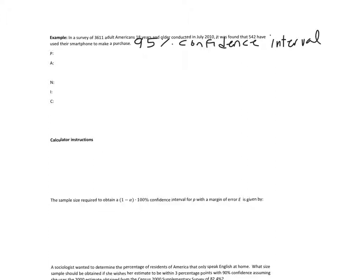Okay, so we've modified this problem. The parameter is proportion. We're going to find the proportion of adults that have made a purchase.